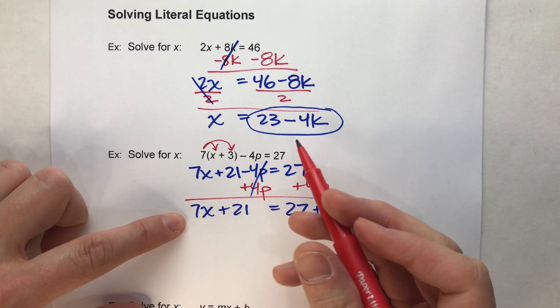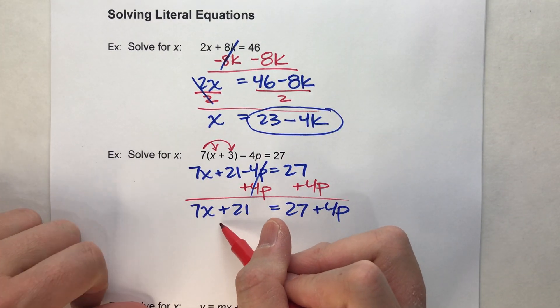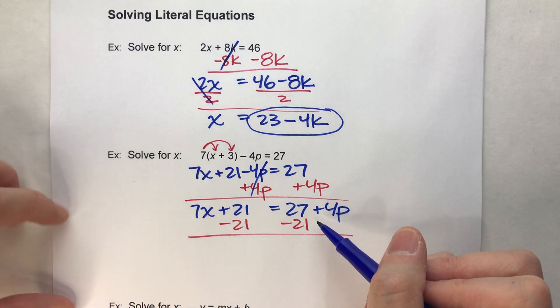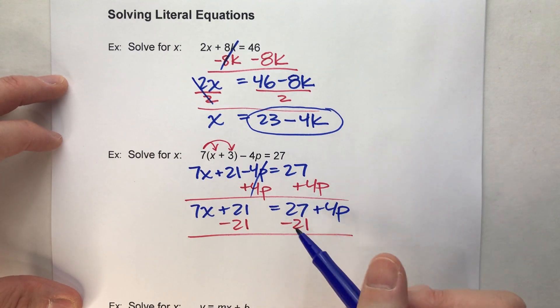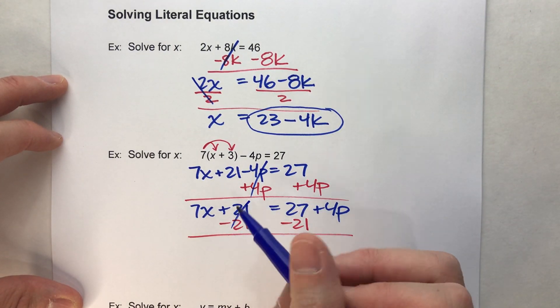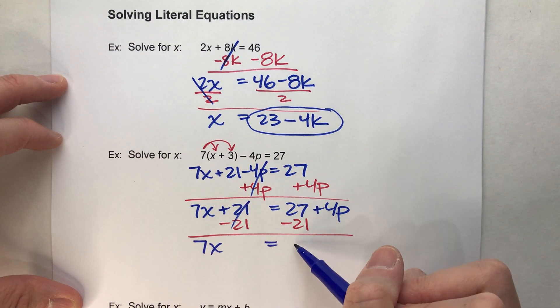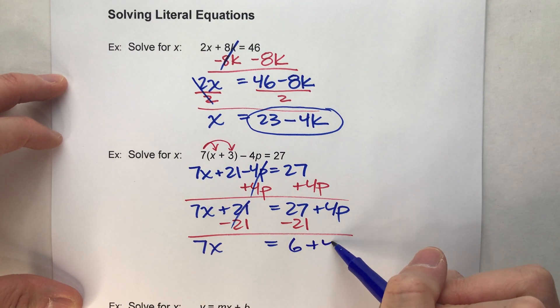I've almost got x by itself, but I do need to undo that plus 21, so I'm going to minus 21 from both sides. And notice, when I minus 21 from the right side, I put it under the 27, because I can subtract 21 from 27. So I get 7x equals, this is going to get me 6, and then I'll drop down my plus 4p.